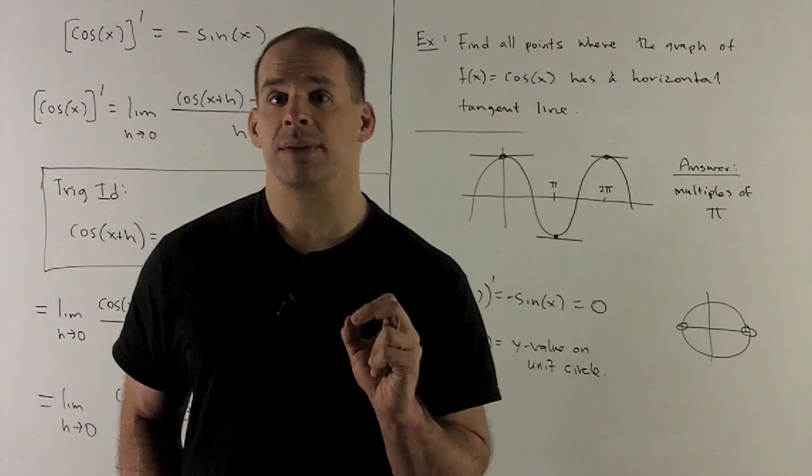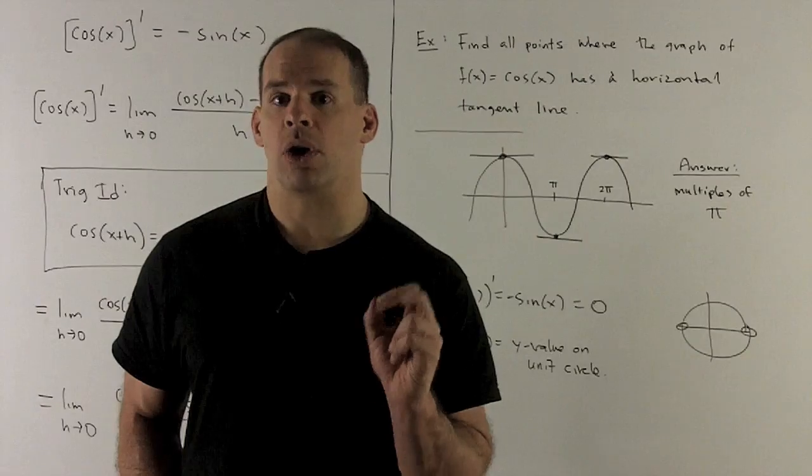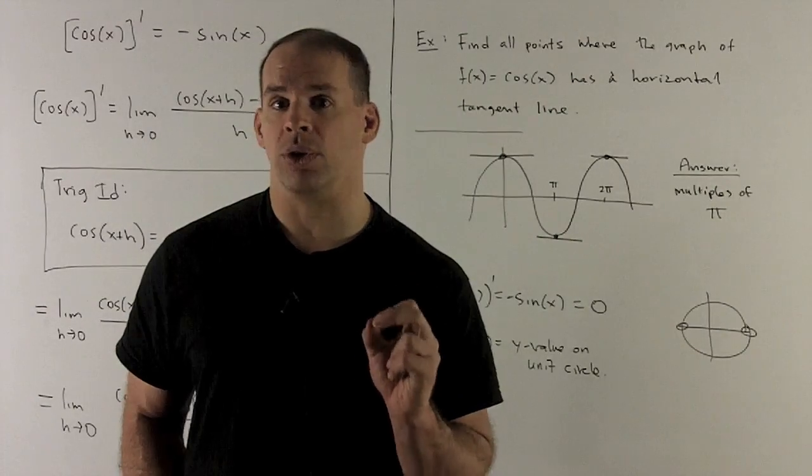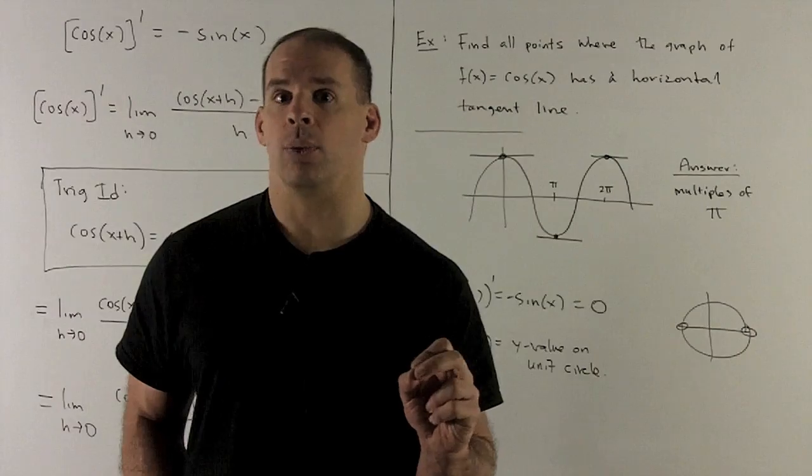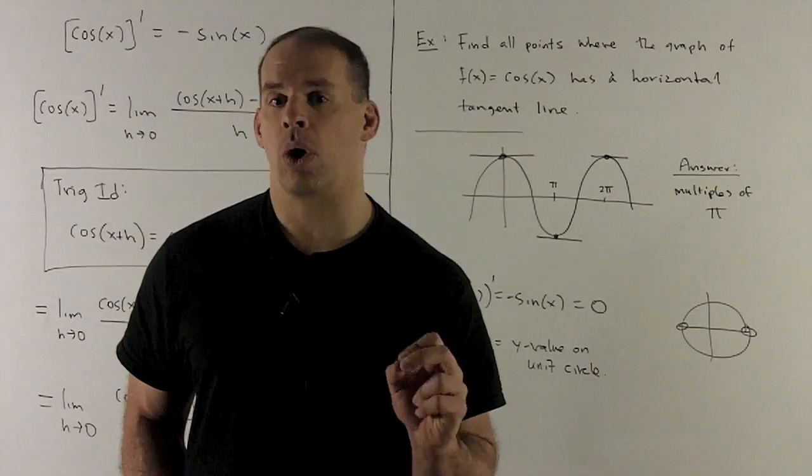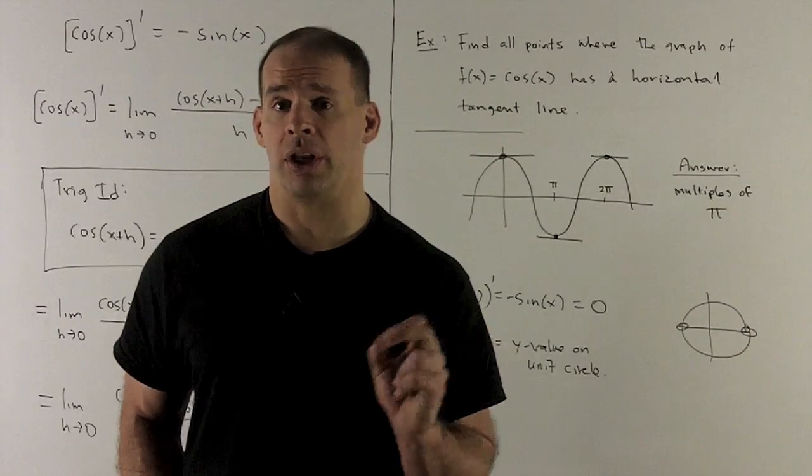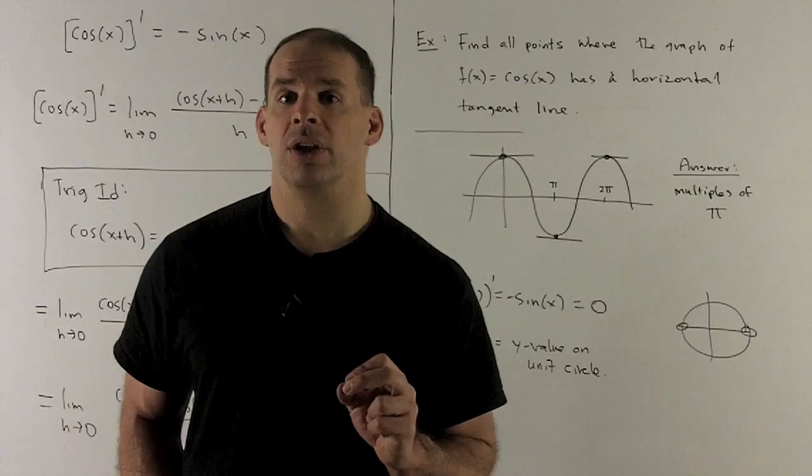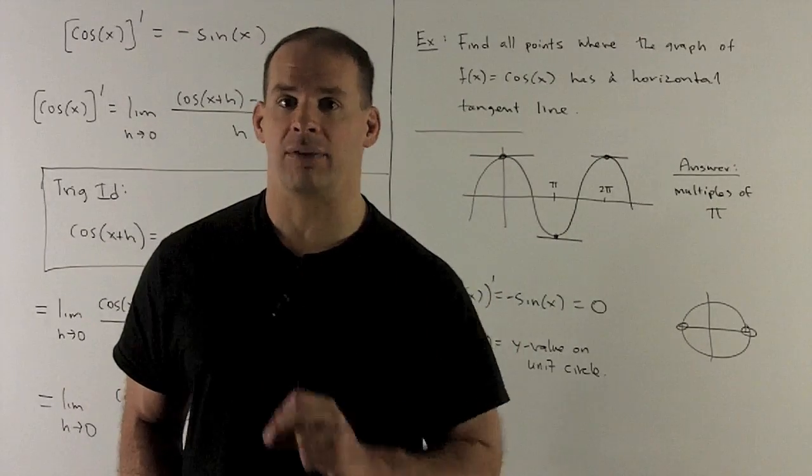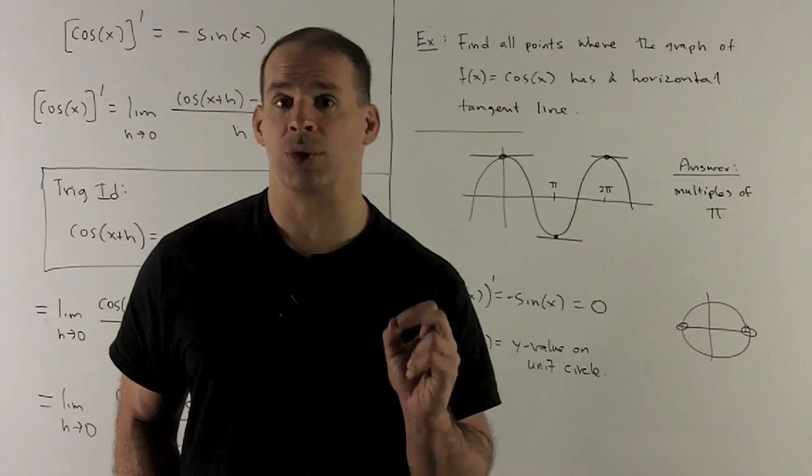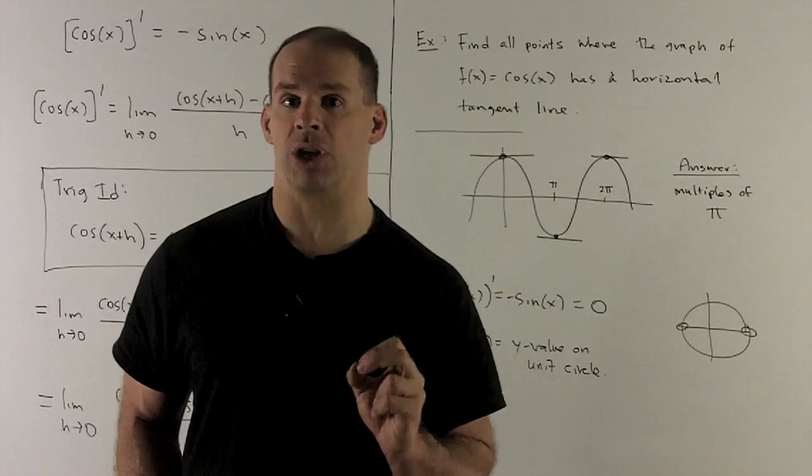Sine of x. If that's equal to 0, recall that sine is the y value in the unit circle. So if the sine is equal to 0, we're looking at where the y value is equal to 0, or where the unit circle hits the x-axis. So that's going to be 0, pi, 2 pi, and then every multiple of pi. So you notice that's going to agree with what we got when we look at the picture.